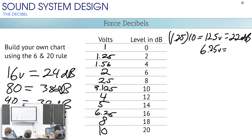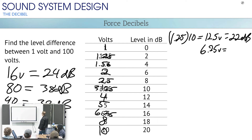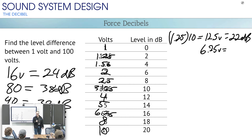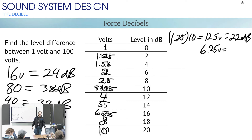Both answers are right. Both answers are right — and this is the whole point of decibels. In decibels, we are cramming huge ranges into smaller ranges, which means you will have more than one actual voltage value that will equal the same decibel level. That is how it works. That is literally the point of decibels.